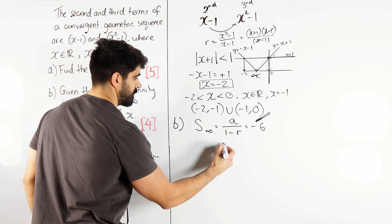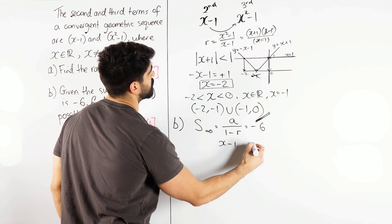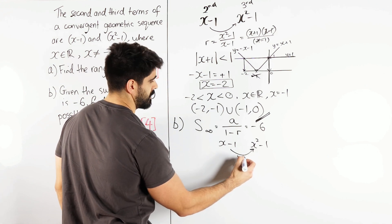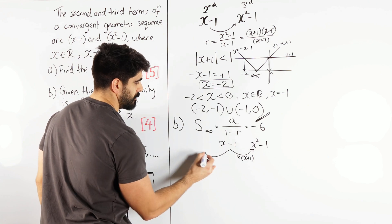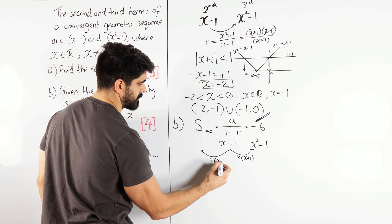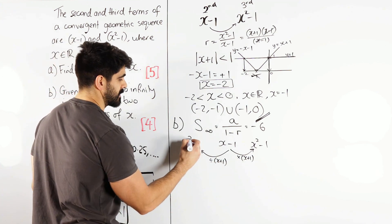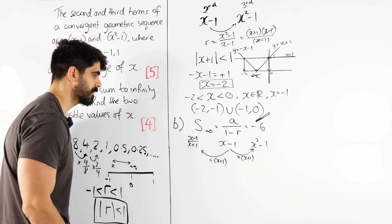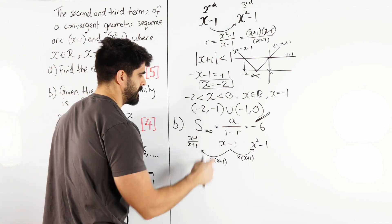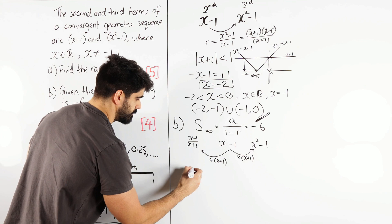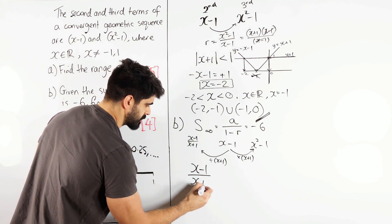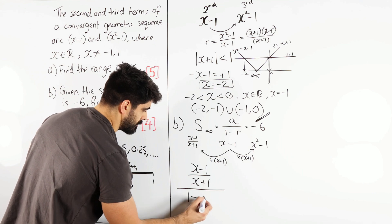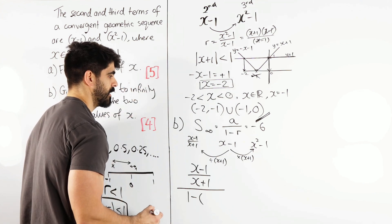That's by dividing by x plus 1. So you have your second term, which is x minus 1. You have your third term, x squared minus 1. We go from here to here by multiplying by x plus 1. So we're going to go back to the first term by dividing by x plus 1, which means our first term is going to be x minus 1 over x plus 1. So that's our first term that's going to go there. So we have x minus 1 over x plus 1, all divided by 1 minus r. 1 minus r, where r is x plus 1.